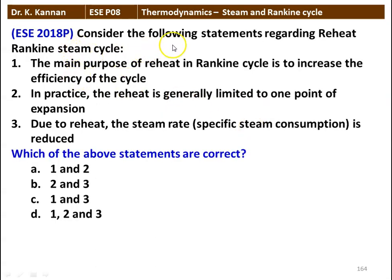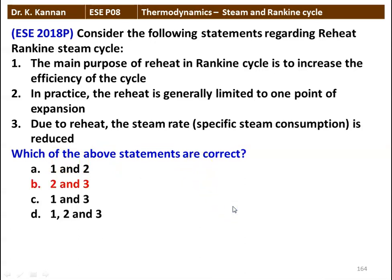Next question: consider the following statements regarding the reheat Rankine cycle. 1. The main purpose of reheat in the Rankine cycle is to increase the efficiency of the cycle. 2. In practice, reheat is generally limited to one point of expansion. 3. Due to reheat, the steam rate — that is specific steam consumption, the amount of steam consumed per kilowatt hour — is reduced. Which of the above statements are correct? The correct answer is 2 and 3. Reheat is generally limited to one point, and due to reheating, the amount of steam required for producing power output is reduced.